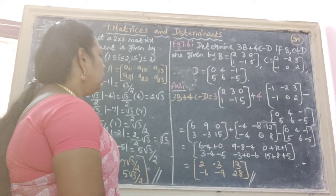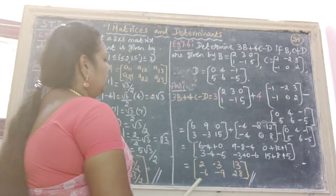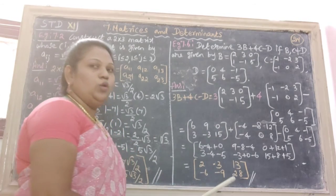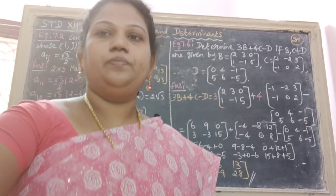Therefore we get the answer 2, minus 3, 13, minus 6, minus 9, 28. Okay.